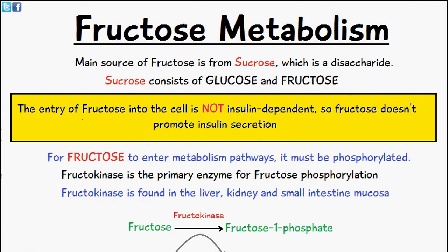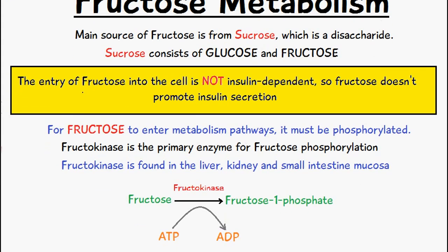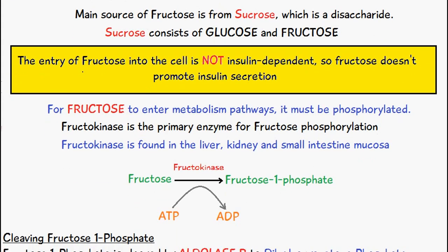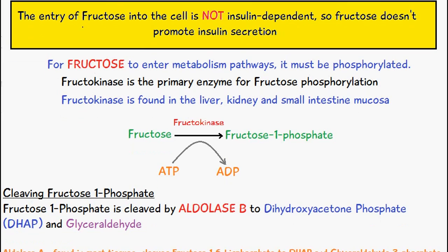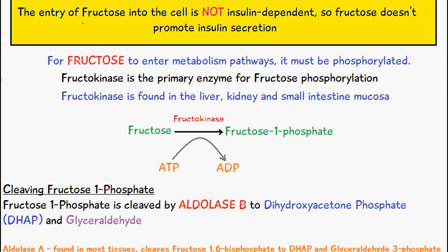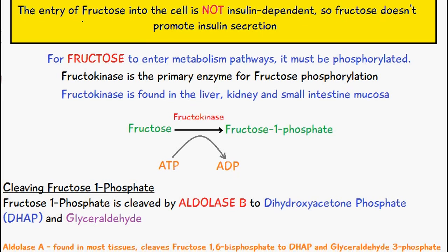For fructose to enter the metabolic pathway, it first must be phosphorylated — meaning the addition of a phosphate group. The enzyme responsible for fructose phosphorylation in fructose metabolism is fructokinase, which is found in the liver, kidney, and the small intestine mucosa.